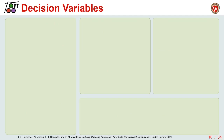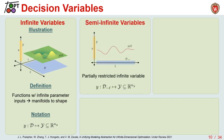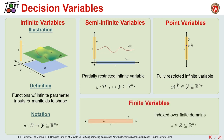Next, we have decision variables, which include infinite variables — the decision functions that depend on infinite parameters as inputs — these are the manifolds we're trying to shape. We can also have semi-infinite variables, which correspond to a restricted portion of that function, as seen by the red line on the manifold. We can have point variables, which are infinite variables defined at a particular point of interest. And we can have regular finite variables, which are independent of infinite domains and denote other decisions such as first-stage variables from stochastic optimization.